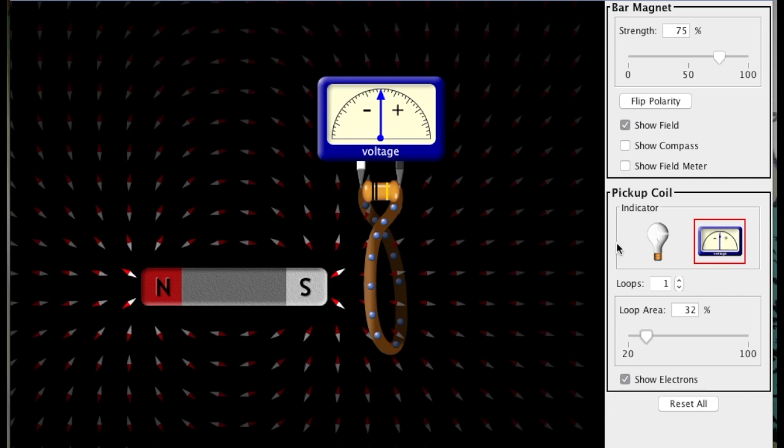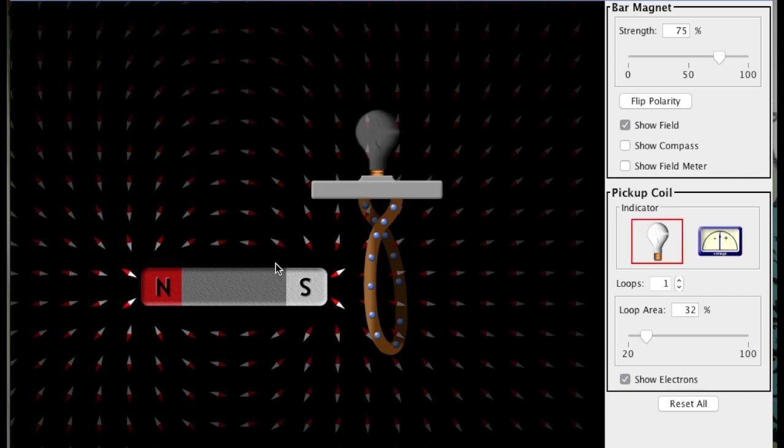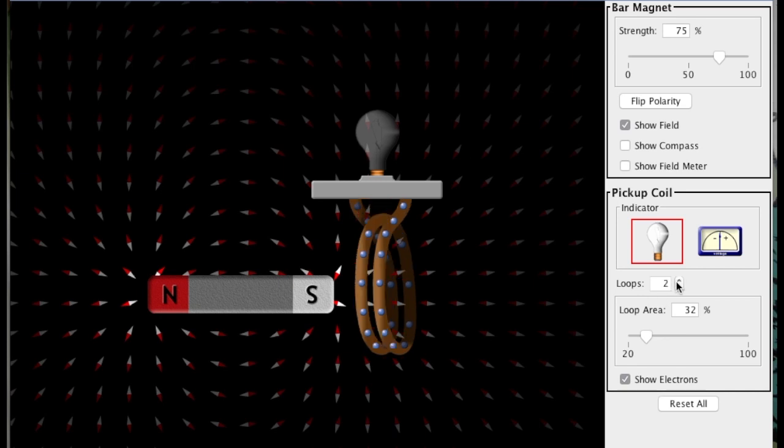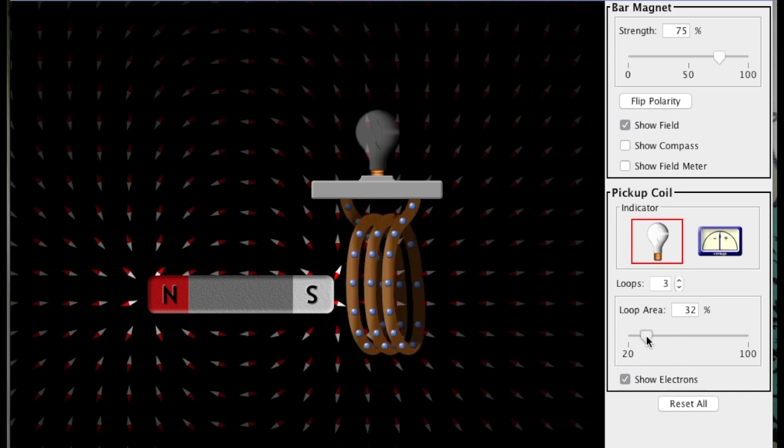I can replace the meter with a bulb. Note that the bulb lights, whether the electrons are going clockwise or counterclockwise. If I have a single small loop of wire, the bulb does not get very bright. If I increase the number of loops and the size of the loops, I can get the bulb to get very bright.